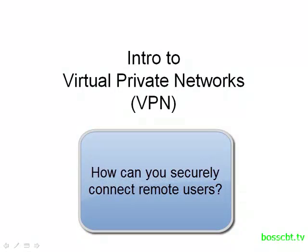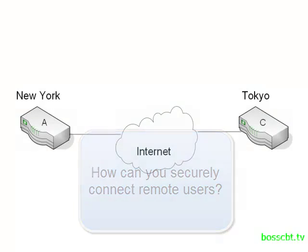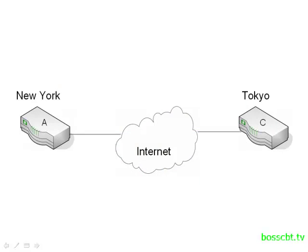Let's get started with a question: how do you securely connect remote users? Whether those remote users are in an office all the way around the world, or if they're mobile — like a traveling salesperson. Data is at risk when it traverses unsecured shared networks like the Internet. Anybody on there could potentially intercept your data, and if it's sensitive information, you don't want that to happen.